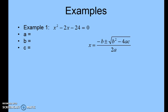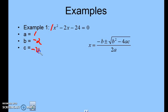Let's try Example 1: x² minus 2x minus 24 equals zero. We're going to use the quadratic formula to find the solution. First, identify a, b, and c. Here, a is 1, b is negative 2, and c is negative 24. Once you identify a, b, and c, plug them into the quadratic formula and find x.